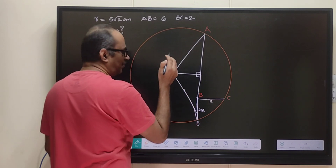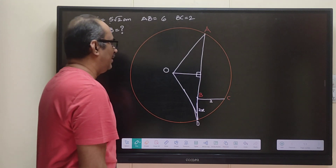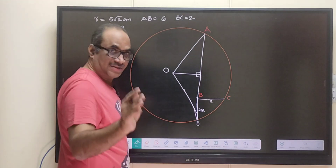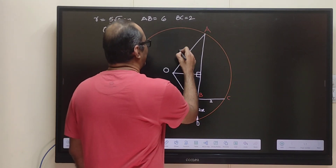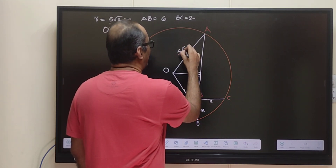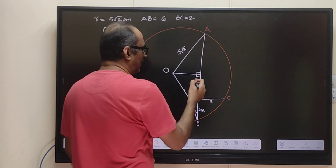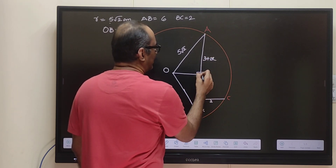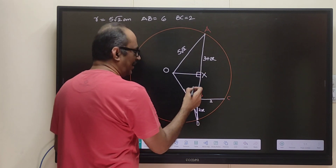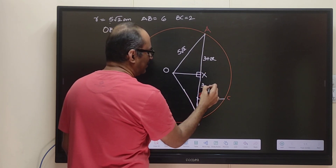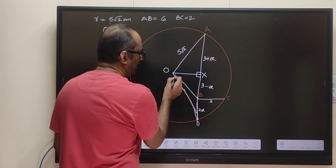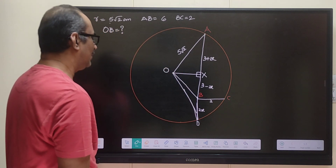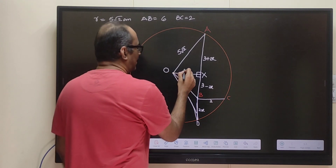What we are doing now is joining O to A and O to D. We will also join O to B and O to C. Now we know that OA equals 5√2 centimeters and AB is 6. So we'll take BD as 2x, so that we can divide the length AD (6 + 2x) into two parts: (3 + x) and (3 + x). In that scenario, AX will be 3 + x and BX will be 3 − x.